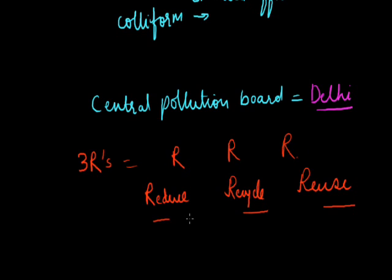The third R is for Reuse. This is actually even better than recycling because the process of recycling uses some energy. In the reuse strategy, we can simply use things again and again. So, reduce means we use things less, recycle means things can be transformed into new articles, and reuse means we can use the recycled items again. This way we can control pollution on our behalf.